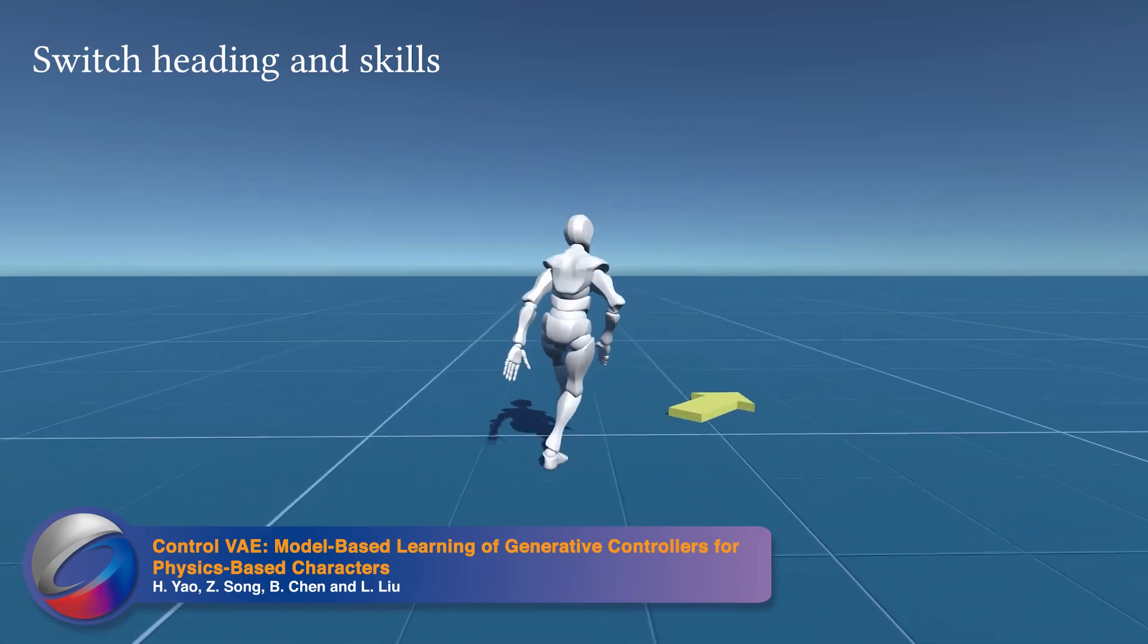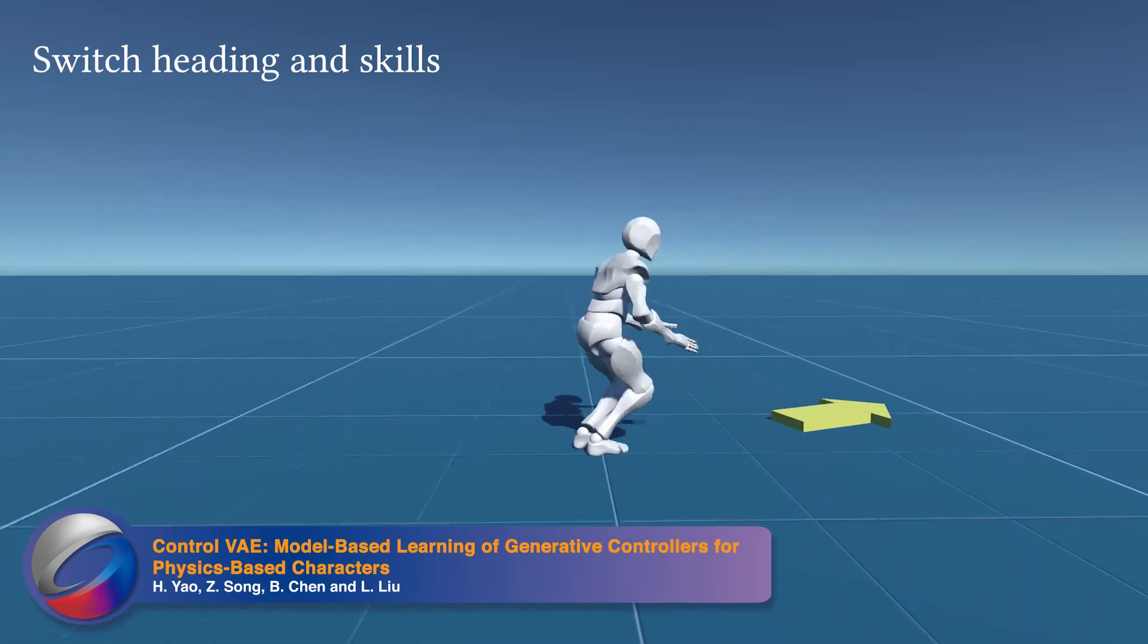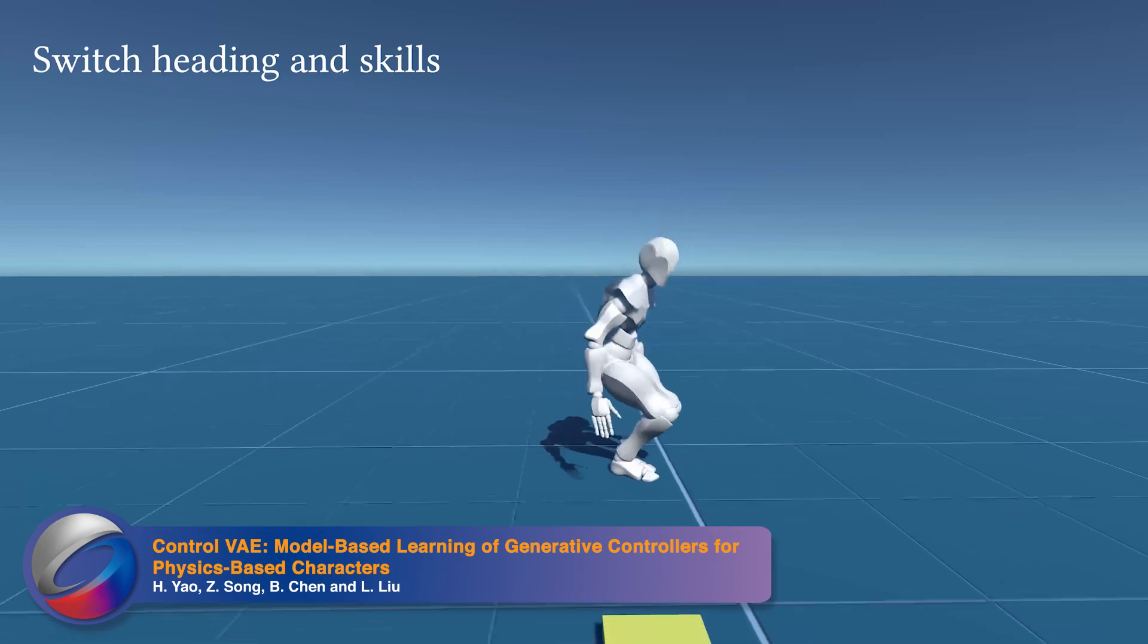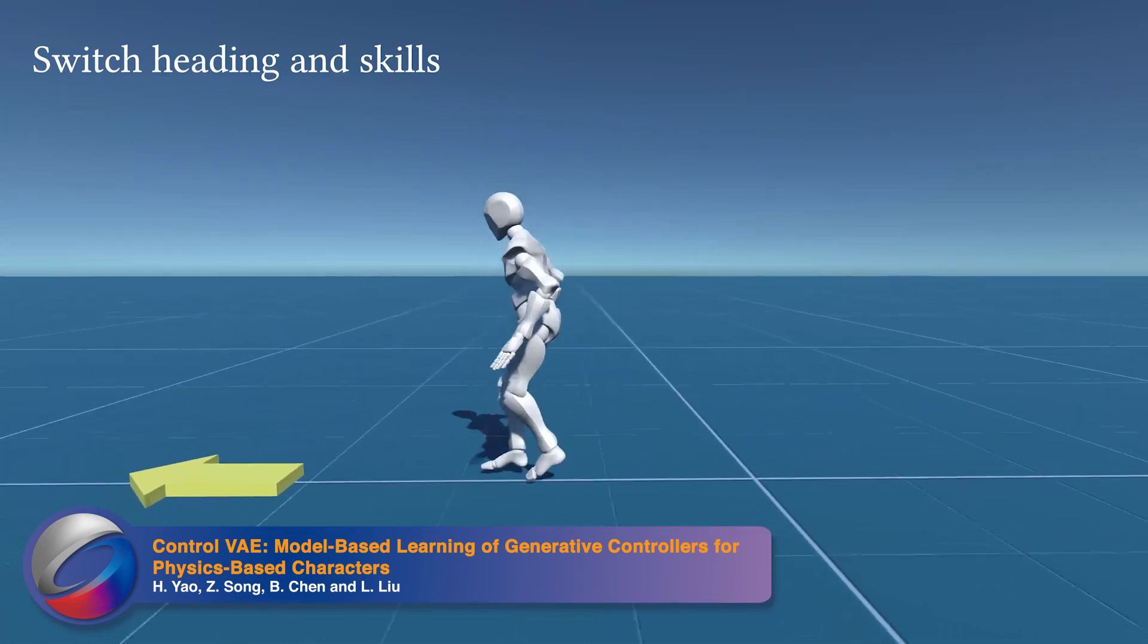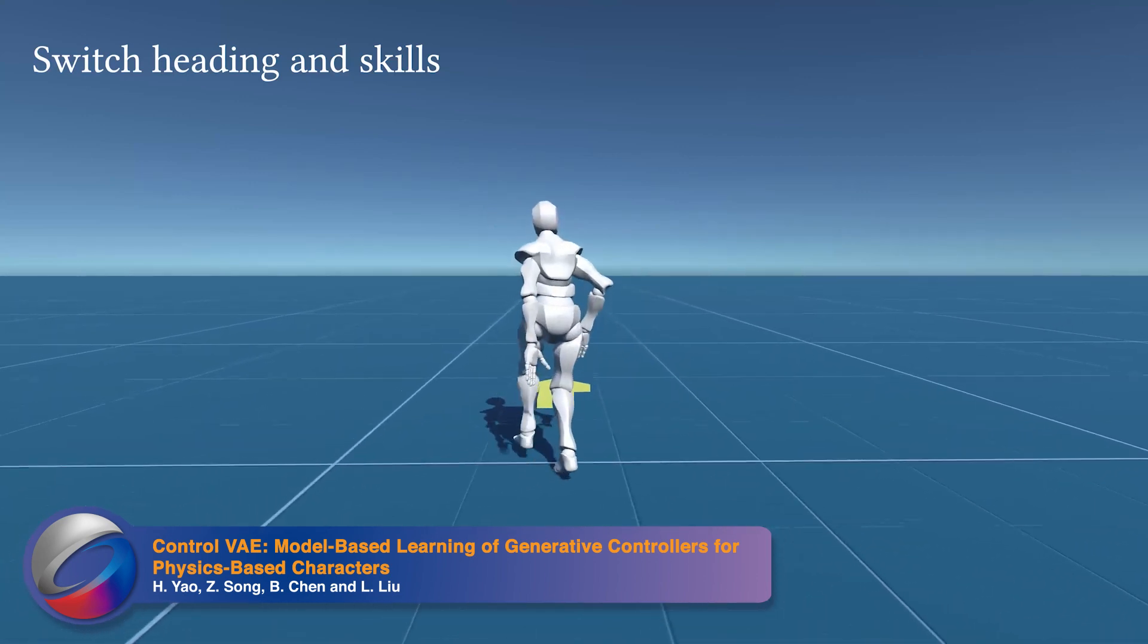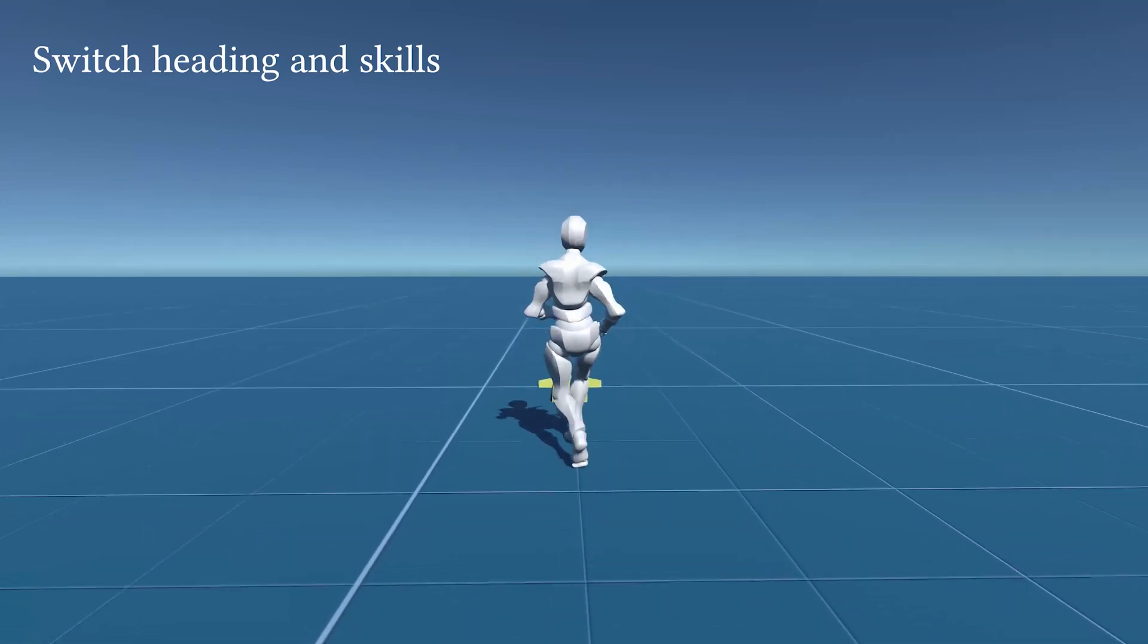Computer animation has long been reliant on transferring human performance via motion capture to animated characters. Recent work has shown that deep learning can be used to control a physics-based simulation.